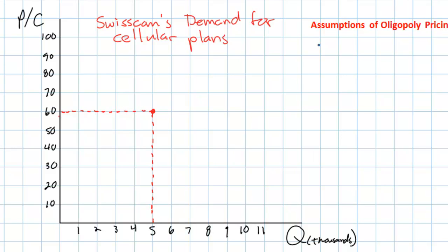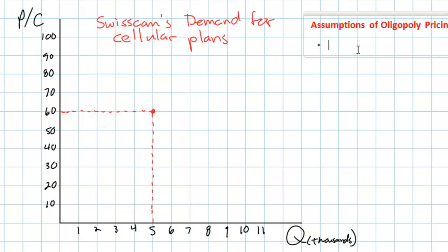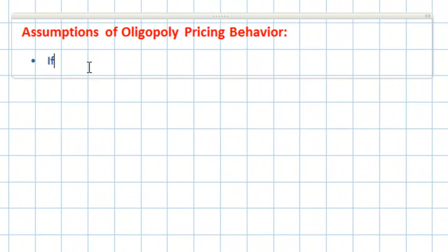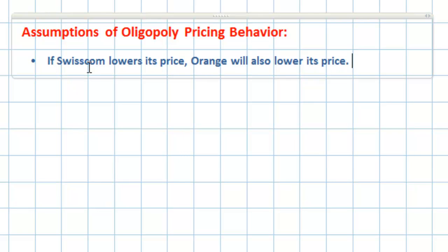What we want to know is what will happen to the demand for Swisscom's cell plans if Swisscom lowers its price, and what would happen if Swisscom raised its price. In order to determine how consumers will respond to price changes from the equilibrium price of $60, we must try to predict what Swisscom's primary competitor Orange will do in response. So let's make some assumptions. If Swisscom lowers its price, why would Orange lower its price as well?